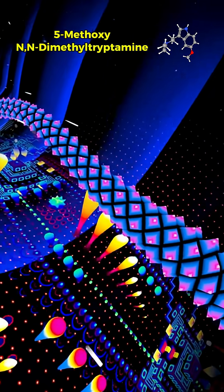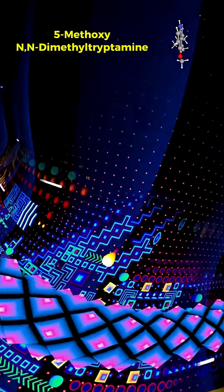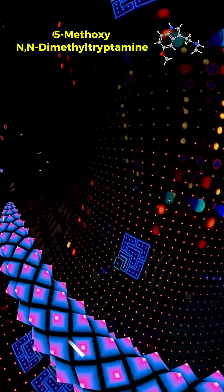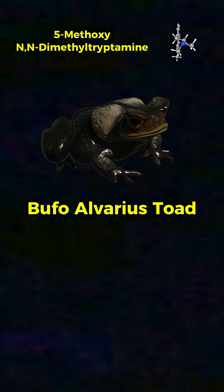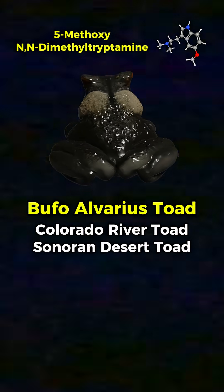5-MeO-DMT is a naturally occurring tryptamine psychedelic found in a handful of plants and in the venom of the Bufo alvarius toad, also known as the Colorado River toad, or the Sonoran Desert toad.